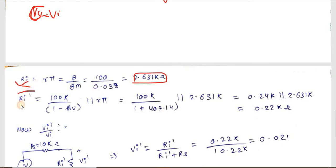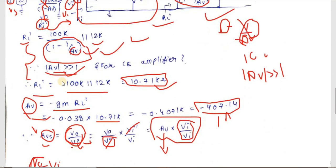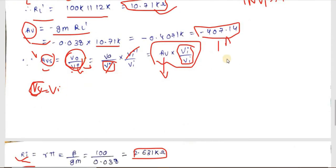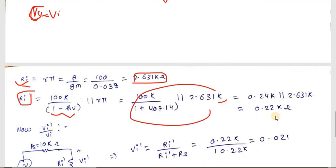With Av = −407.14, the Miller input resistance becomes 100k/(1 + 407.14). So Ri' = [100k/408.14] ∥ 2.631k. Using a calculator, Ri' ≈ 0.22 kΩ.